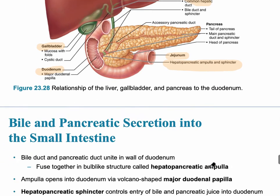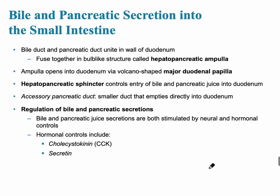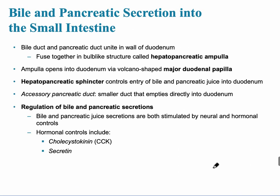The next slide shows bile and pancreatic secretion into the small intestine. The bile duct and the pancreatic duct unite and lead into the wall of the duodenum, fusing into a bulb-like structure called the hepatopancreatic ampulla, and then into the hepatopancreatic sphincter. The sphincter controls the entry of bile and pancreatic juice into the duodenum, basically like a valve.